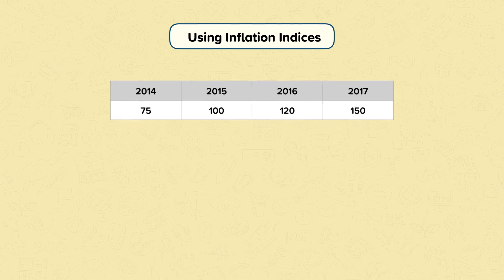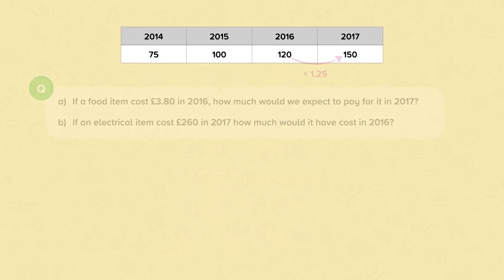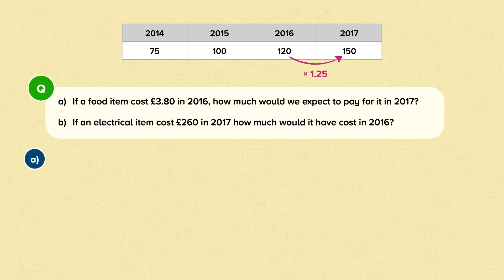Sometimes the information is presented to you in a graph. The information is exactly the same, except you have to read off the graph to obtain the value. Let's look at a question together. Part A asks us: if a food item cost £3.80 in 2016, how much would we expect to pay for it in 2017? We already know the multiplier between 2016 and 2017, so we use this with the price. 3.80 multiplied by 1.25 is 4.75, so the item would have cost £4.75 in 2017.